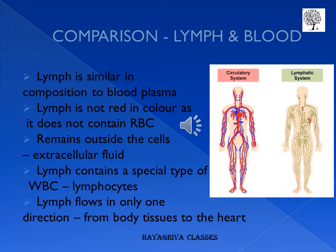Let us make a comparison of lymph and blood. Lymph is a light yellow liquid, somewhat similar in composition to blood plasma. It is not red in color because it does not contain red blood cells. Lymph contains large protein molecules, digested food, germs from cells, and fragments of dead cells. Lymph flows only in one direction — from the body tissues to the heart. Because lymph is obtained from tissue fluid which remains outside the cells of the body, lymph is said to be an extracellular fluid.